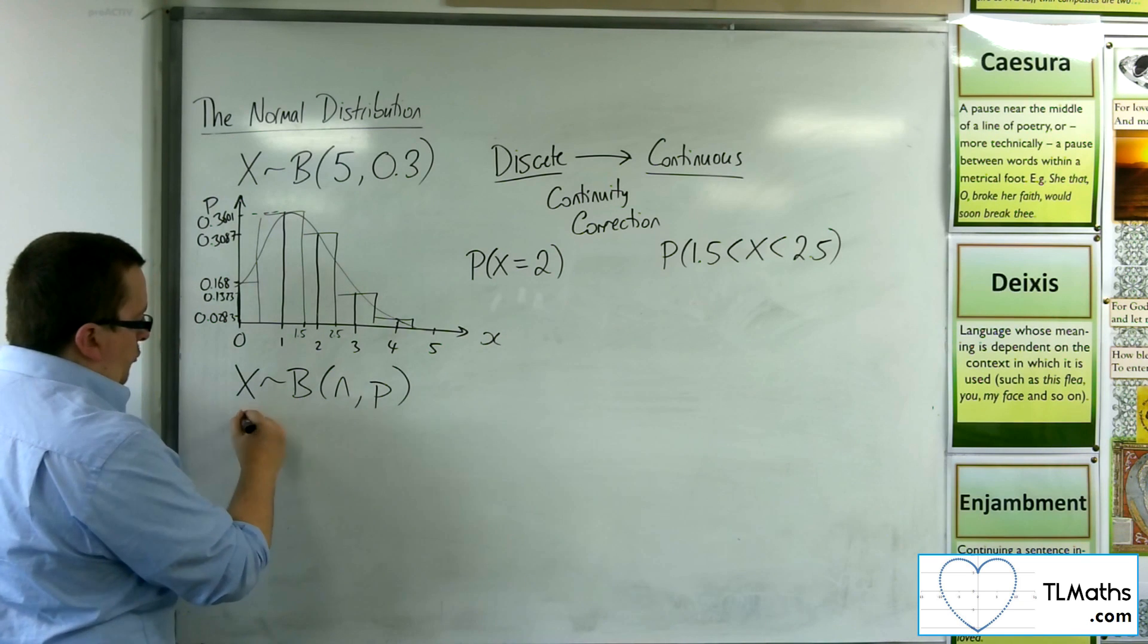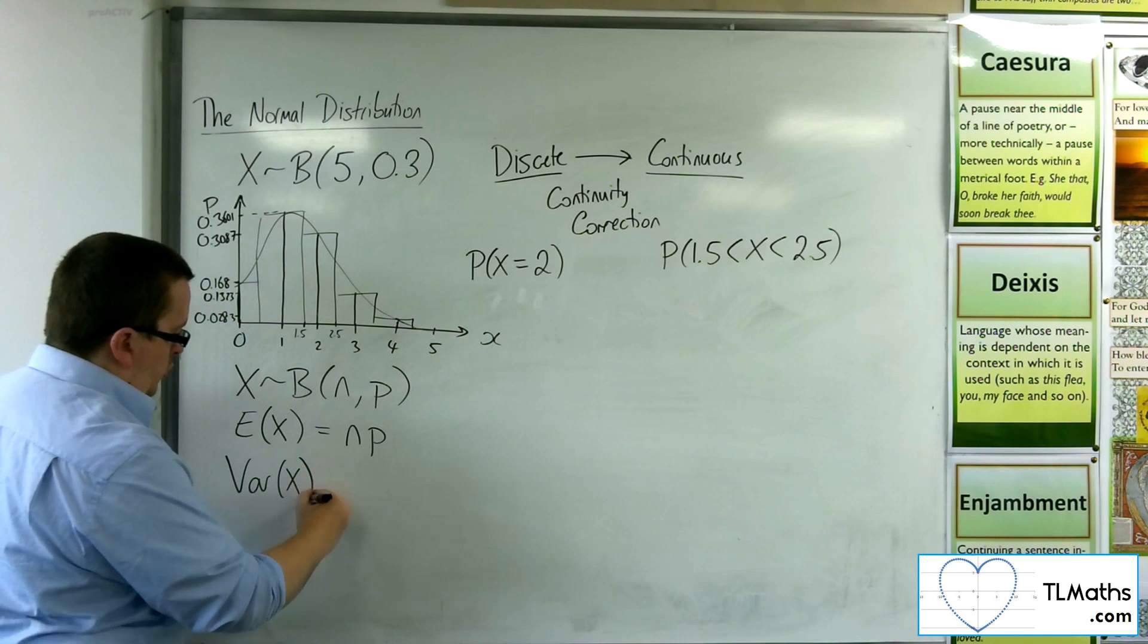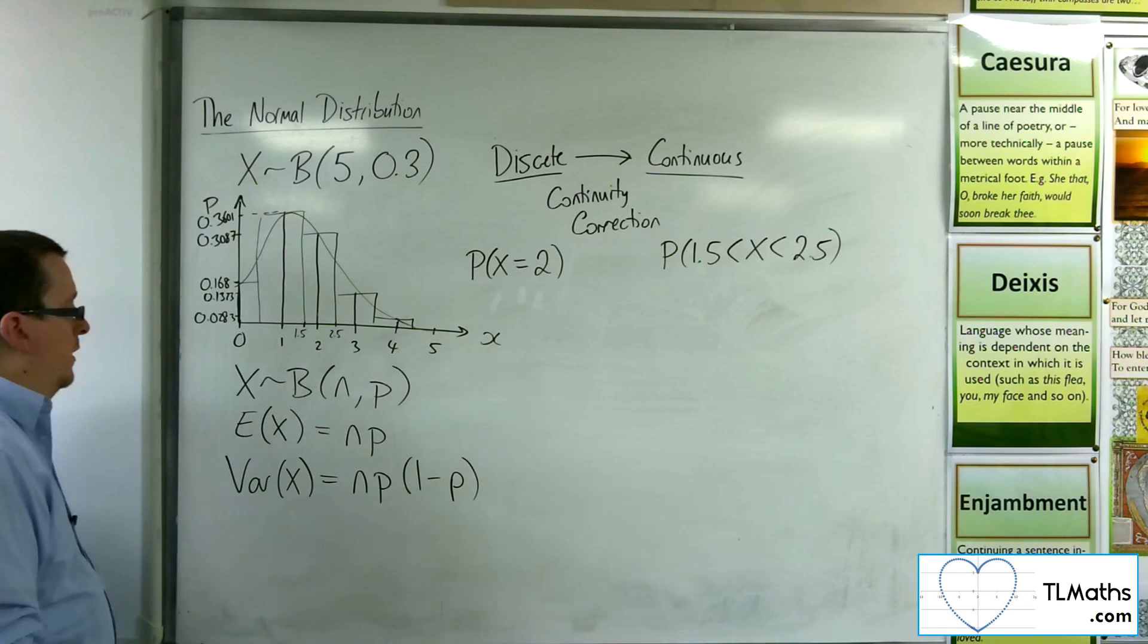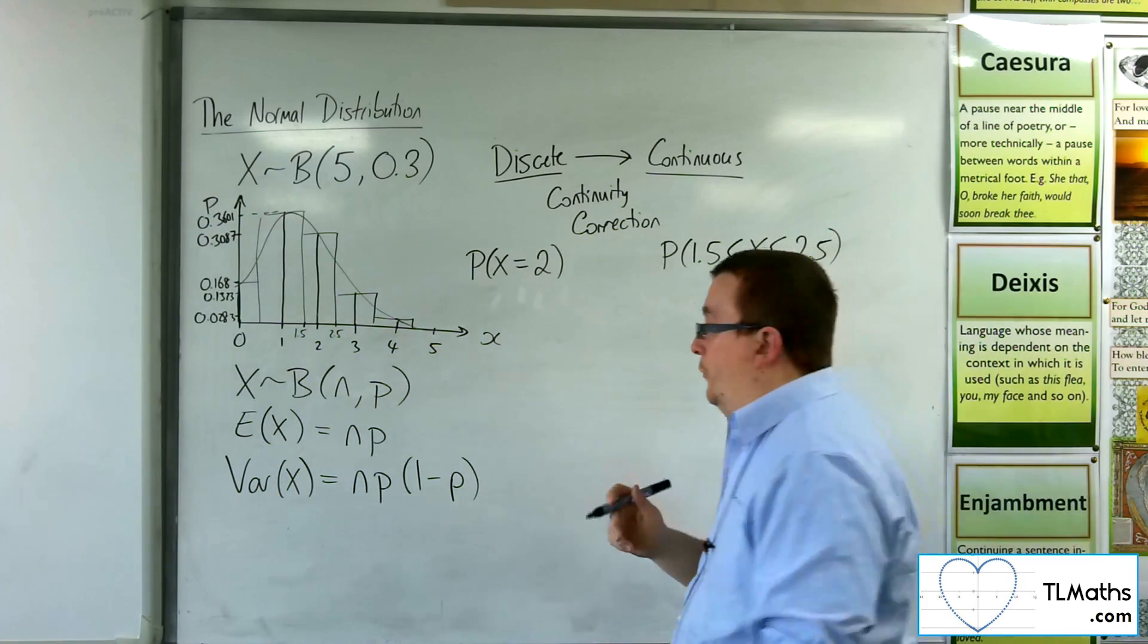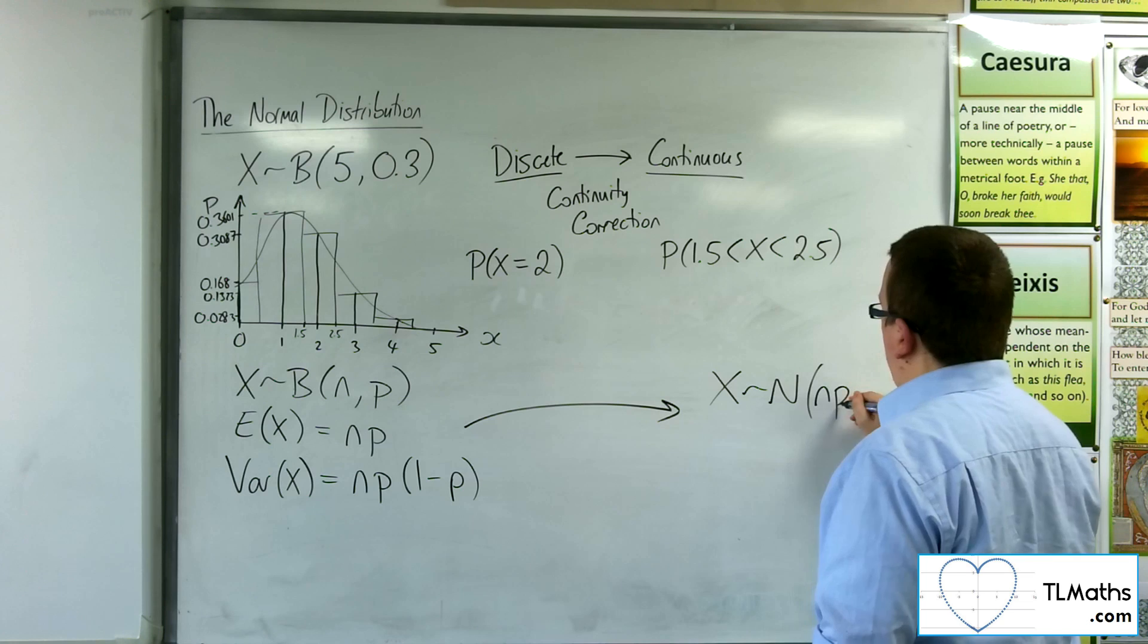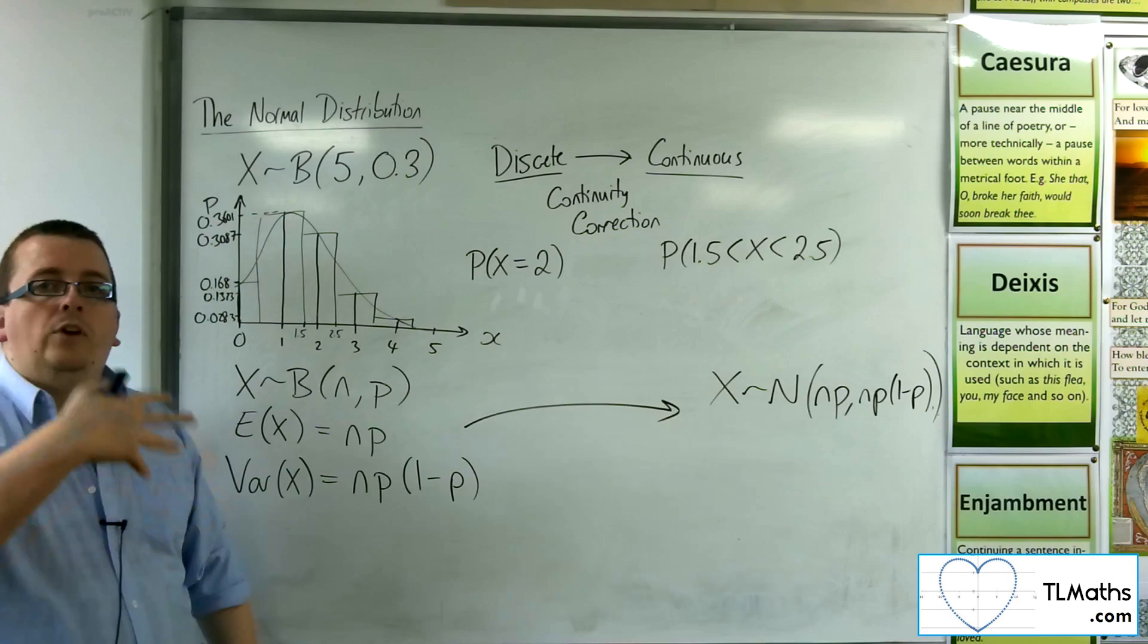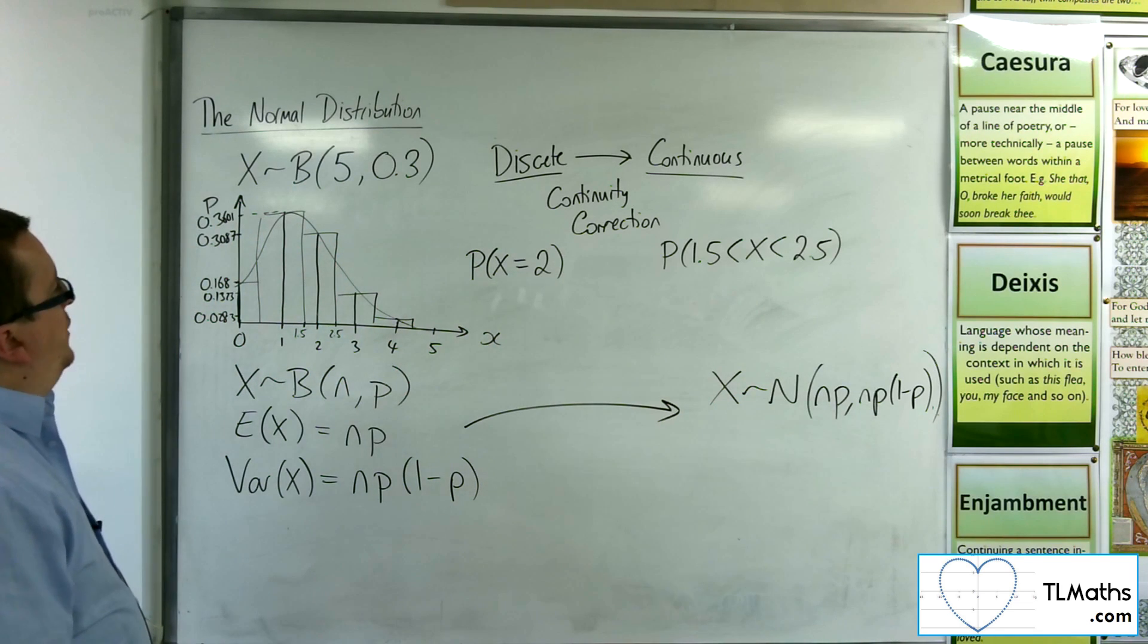So, for a binomial distribution with n trials and probability p, the mean, otherwise written as the expected value of x, is n times p. And the variance of the distribution is written as np(1-p), otherwise written as npq, where q is 1 minus p. So, this gives you a mean and a variance of the binomial distribution, which you can then use when you convert over to the normal distribution, using the mean as np and the variance as np(1-p).